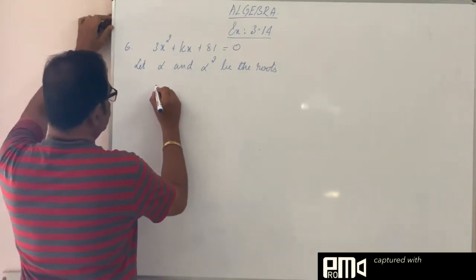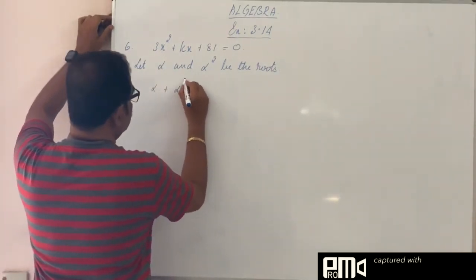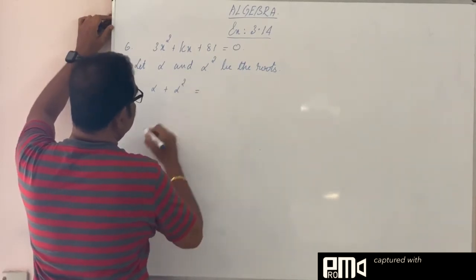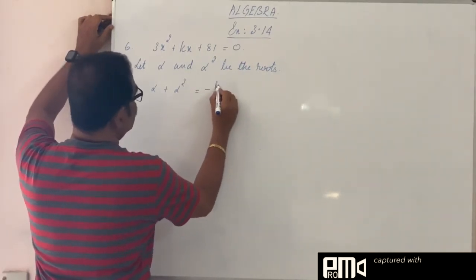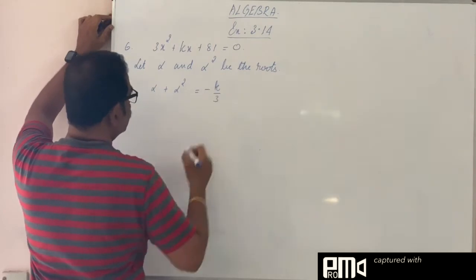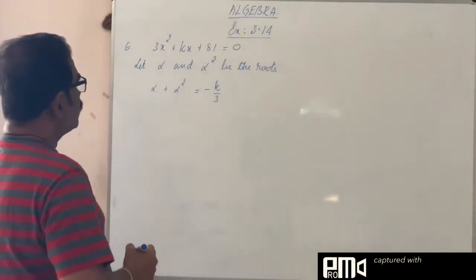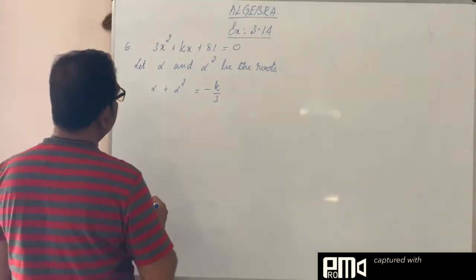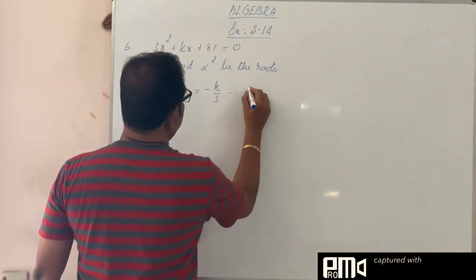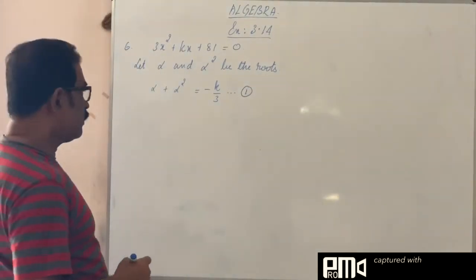Sum of the roots, alpha plus alpha square equals minus b by a, so minus k by 3. So alpha plus alpha square is minus k by 3. This is equation number 1.